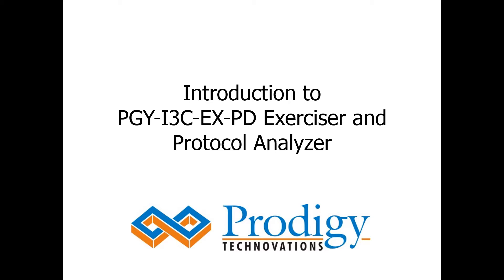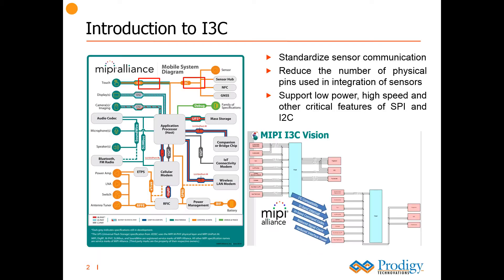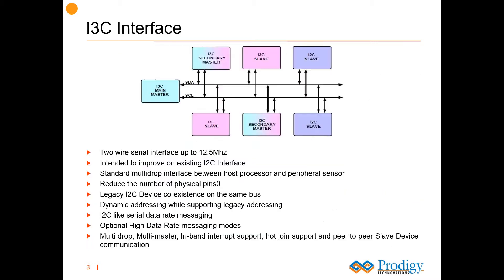Welcome to this brief video on Prodigy i3C Exerciser and Protocol Decoder. A typical mobile system consists of multiple sensors. As the number of sensors on a smartphone is increasing at an exponential rate, the need for standardizing sensor communication is growing — providing a fast, low-cost, low-power, two-wire digital interface for sensors. MIPI i3C is a two-wire serial interface standard that improves upon the features of i2C and SPI while maintaining backward compatibility, offering a flexible multi-drop interface between the host processor and peripheral sensors.